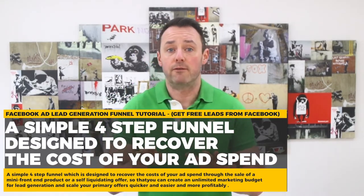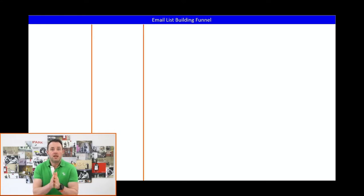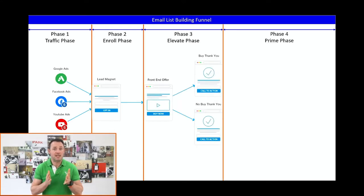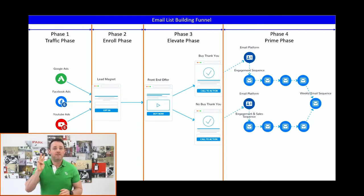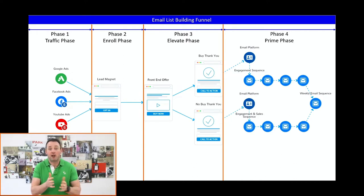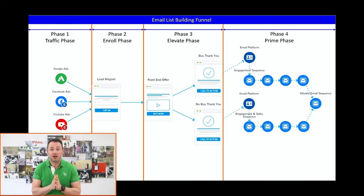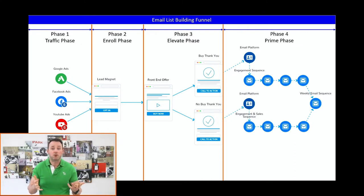I want to start off by giving you an overview of the funnel and then bring you step by step through each phase, outlining the keys to success in each. Phase one is the traffic phase, where we choose the source of traffic to drive to our lead magnet. Phase two is the enroll phase, where we capture people's email addresses and enroll them in the concept that a better future is possible. Phase three is the elevate phase, where we make a low dollar offer designed to move them to the next level on our value ascension roadmap. Phase four — often ignored — is where we prime people for our next offer, normally our signature program or membership.